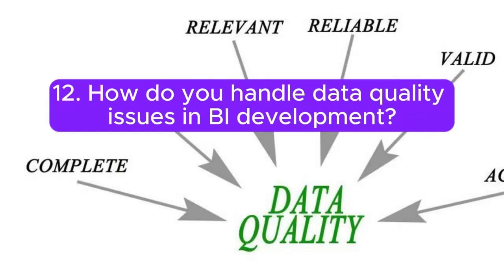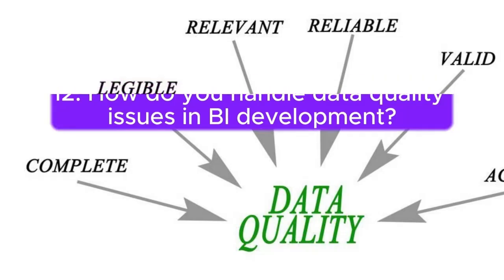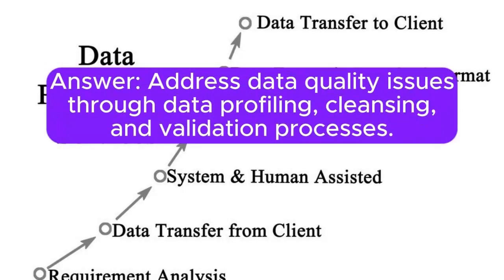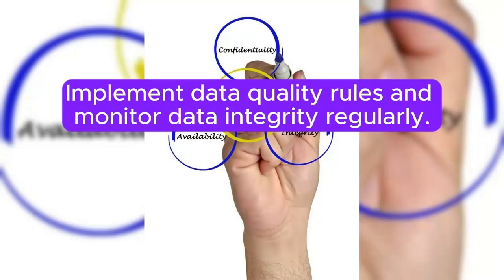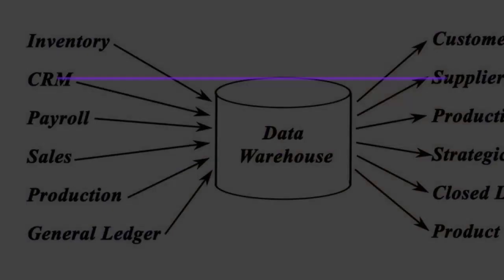Question 12: How do you handle data quality issues in BI development? Answer: Address data quality issues through data profiling, cleansing, and validation processes. Implement data quality rules and monitor data integrity regularly.